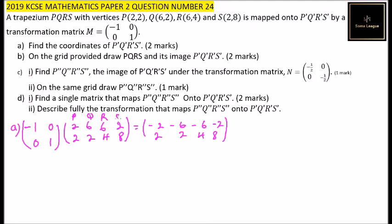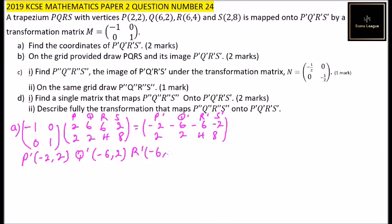This gives us P, Q, R, S on the left and P', Q', R', S' as the image. We can now write the coordinates: P' is (-2, 2), Q' is (-6, 2), R' is (-6, 4), and S' is (-2, 8). Those are the image coordinates, and by doing that you score two marks for section A.